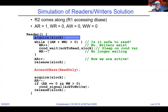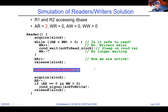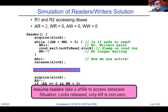R2 arrives, acquires the lock (which is free), checks AW + WW — still zero — so AR++ makes it two, and releases the lock. Now two readers are simultaneously accessing the database. No locks are held; only AR equals two. This is uneventful — the interesting part comes when the writer arrives.